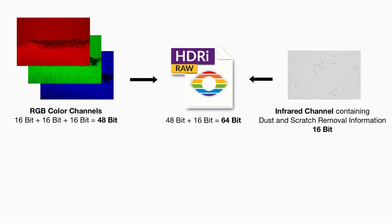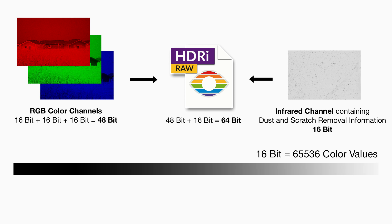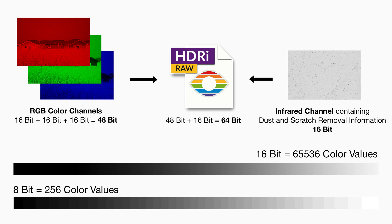An HDRIRAW file contains RGB image data as well as an infrared image. Each color channel holds an uncompressed image with 16-bit color depth. This is a very important prerequisite for SilverFast's lossless archive workflow. 16-bit stands for more than 65,000 color values per channel. In contrast, 8-bit color depth differentiates only 256 color values.